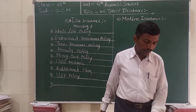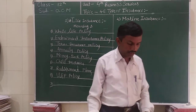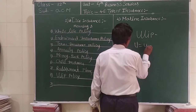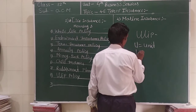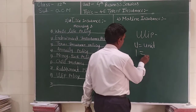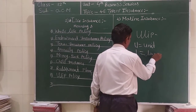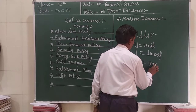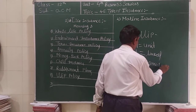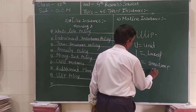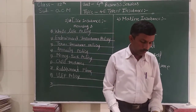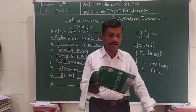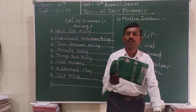The eighth type is ULIP policy, which stands for Unit Linked Insurance Plan. ULIP combines the benefits of a life insurance policy with investment. It links the insurance policy to unit-linked returns and combines the benefits of life insurance with investment maturity and other factors.